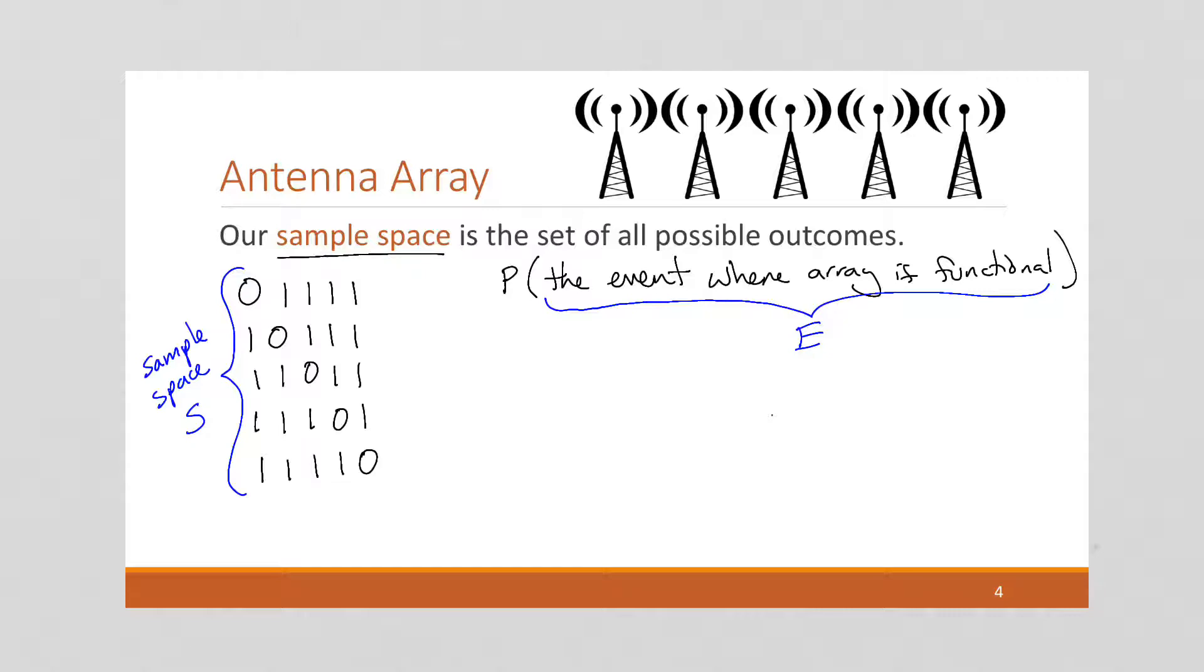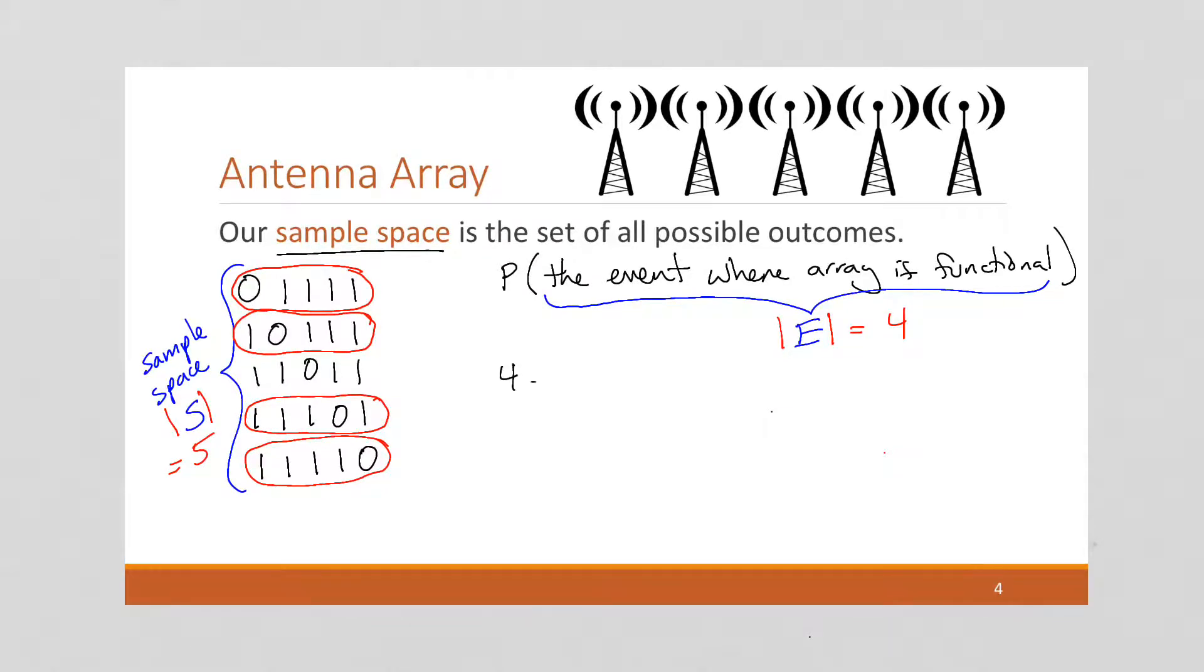So let's see which of these events mean the array is functional. Well, this first one's functional, because we've got more than three in a row that work. Second one's functional, so it's got more than three in a row that work. The third one isn't, but the last two are. So the size of our event space is four. So the size of our event equals four. The size of our sample space is five. And we can calculate this probability as we say we have four events out of five possibilities. And this is going to get us four-fifths equals 0.8 equals 80%, right? So we have an 80% chance of having a functional array.